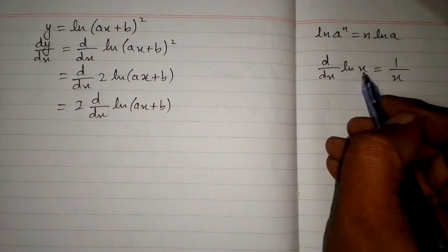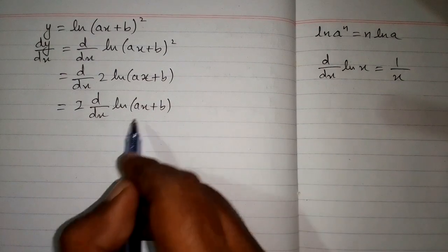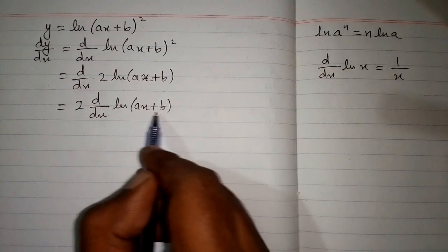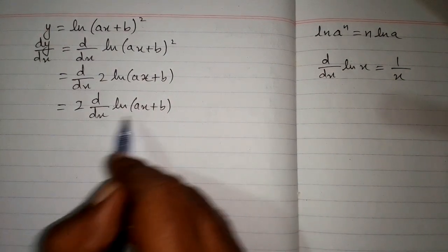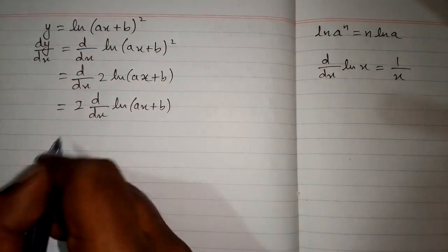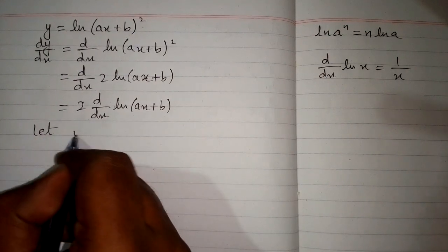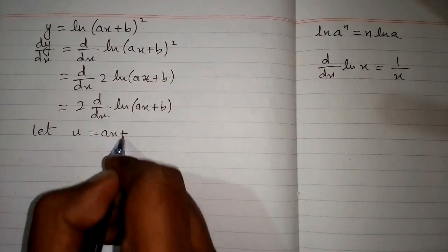But we can see that the variable in the formula and the variable in our expression must be the same, and we have a different thing here. So we will let u equal ax+b.